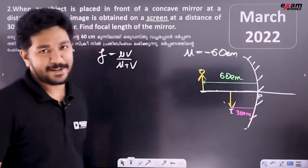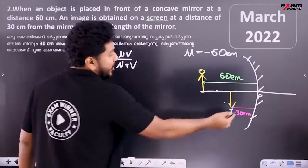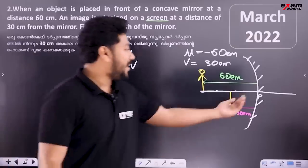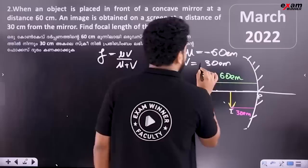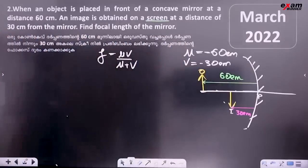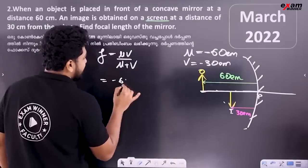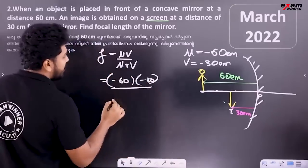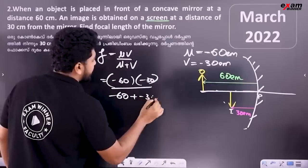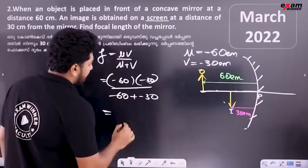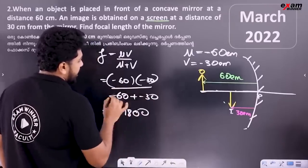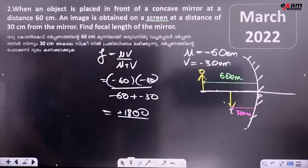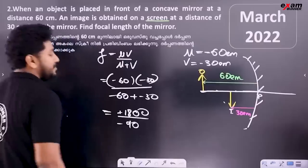The point is negative. u is minus 60, v is minus 30. v times u: minus 30 multiplied, divided by minus 60 plus minus 30, which is minus 90.